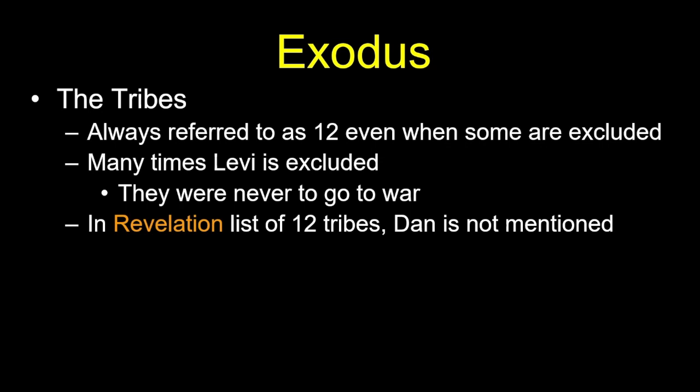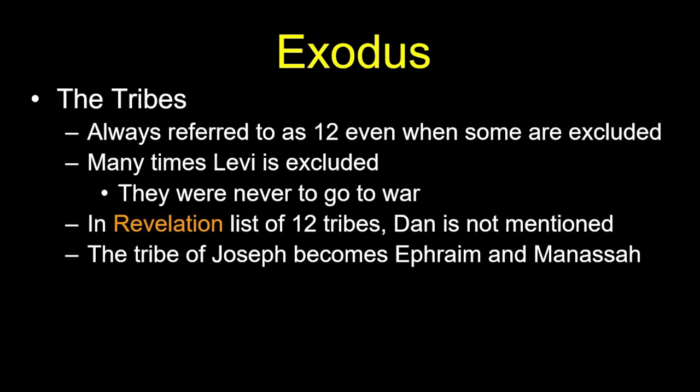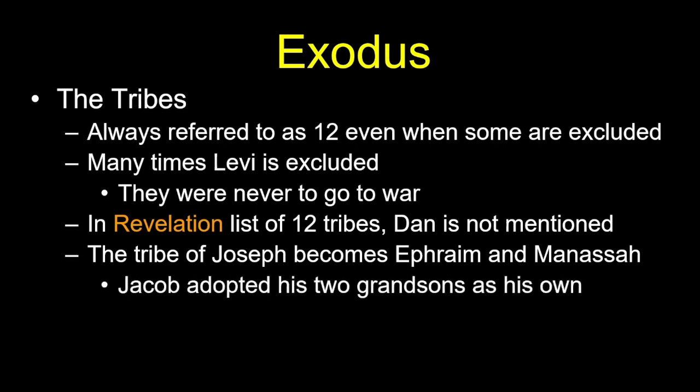In the book of Revelation, 12 tribes are listed but Dan is notably absent. The answer is that Joseph's tribe is split into two — Ephraim and Manasseh — because Jacob adopted his two grandchildren when he went to Egypt. So you're really playing with an alphabet of 13, not 12. You can count Joseph as one tribe with a double portion, or count Ephraim and Manasseh as two separate tribes.